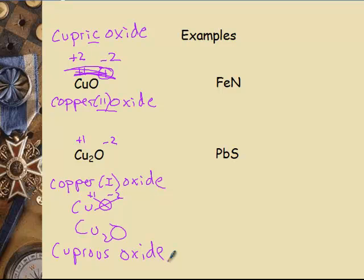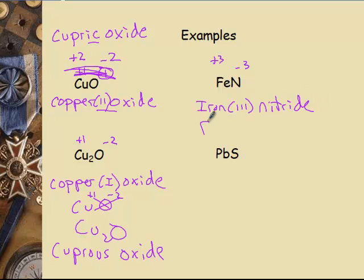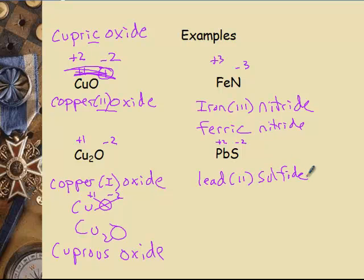Moving to the next tricky one: iron can't be a plus one, but we know nitrogen is a minus three, so iron must be a positive three. That's iron three nitride — a binary nitride. We could also name it ferric nitride, the higher of the two charges. Lead and sulfur: lead can't be a plus one; sulfur is a minus two, so lead is a plus two. This would be lead two sulfide, or plumbous sulfide using the lower charge. That demonstrates both ways to name those compounds.